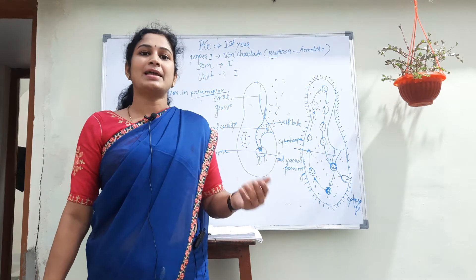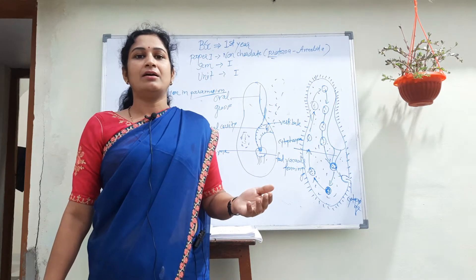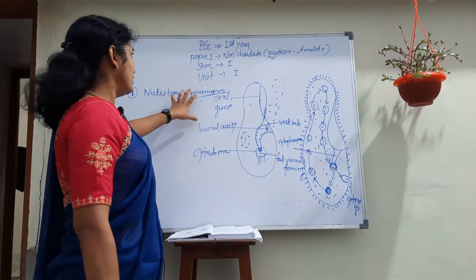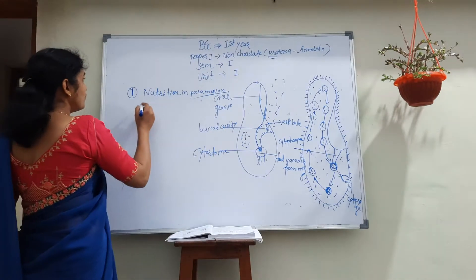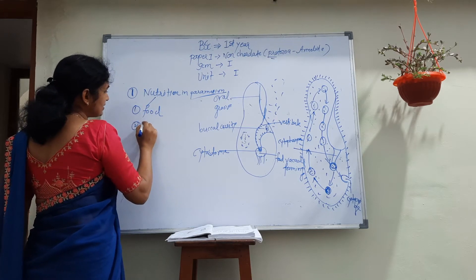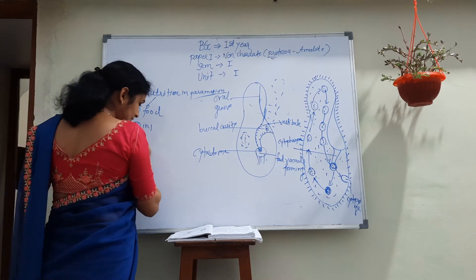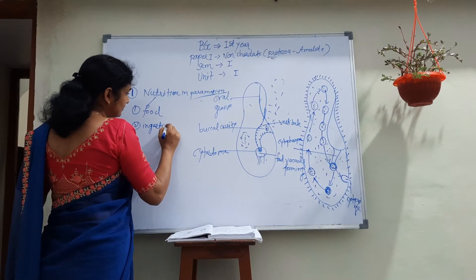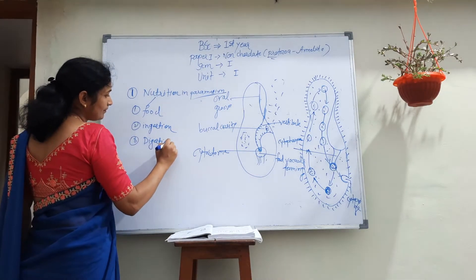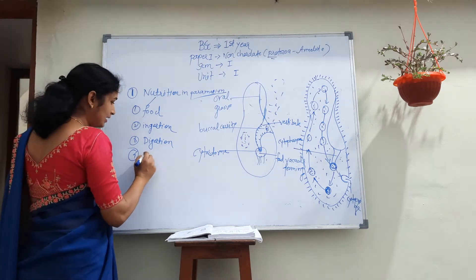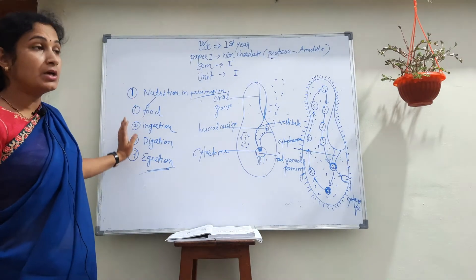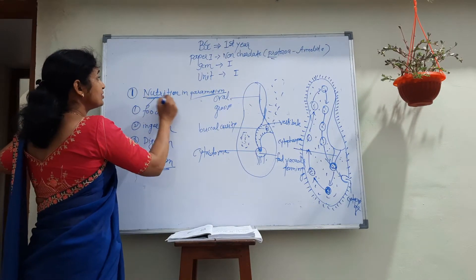What is holozoic manner? Holozoic manner means nutrition like an animal. In this nutrition of Paramecium there are four stages: the first one is food, second one is ingestion, third one is digestion, and the fourth one is egestion. All these are the four stages of nutrition.